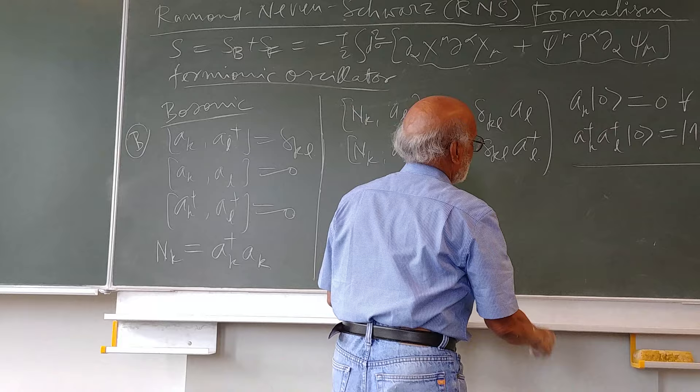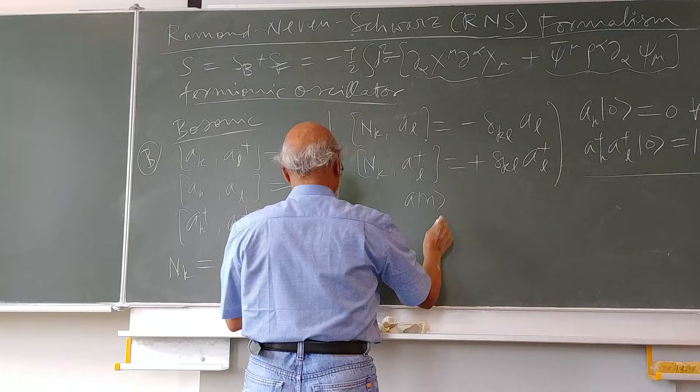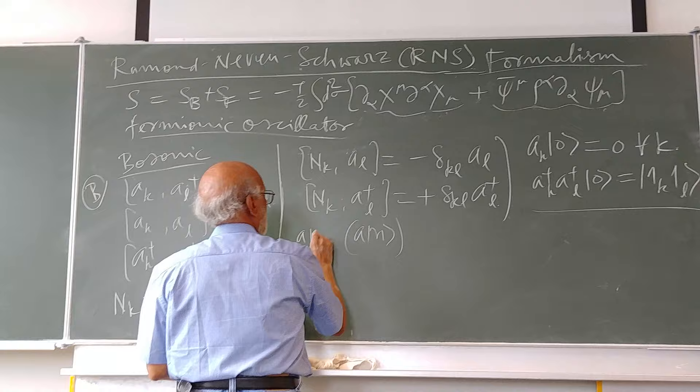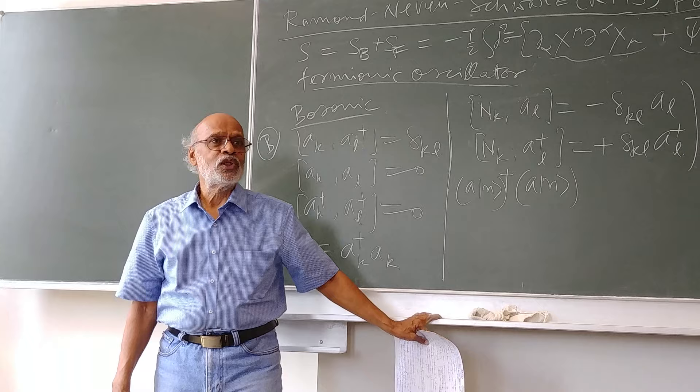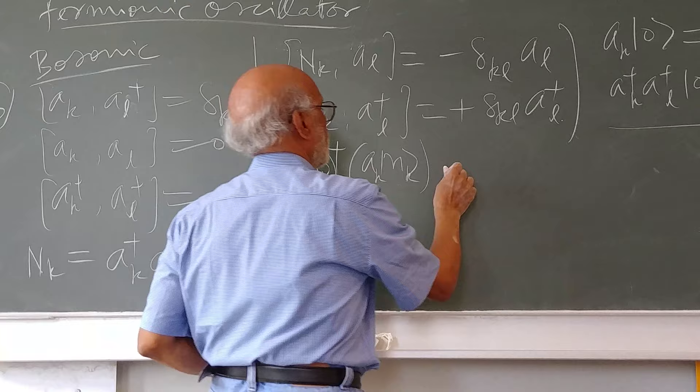One more thing that is even more important to remember is that this state should have a positive definite norm. So I consider a state nk, you can put k here, k here, k here, and k here. This would be nk, nk, and ak dagger.